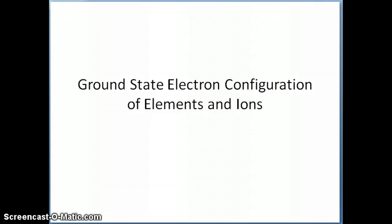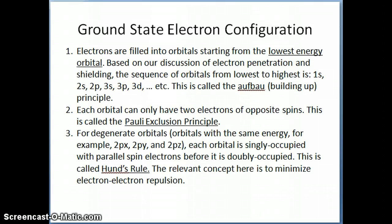Hi everyone. In this topic, I'm going to discuss the ground state electron configuration of elements in the atomic form as well as the ionic form. The idea of ground state electron configuration is something you've probably done before in prior chemistry courses, either in high school or in introductory college courses. What we're going to do in this lecture is talk about the reasons, coming from the wave function form of the orbitals, why we write the electron configuration a certain way.